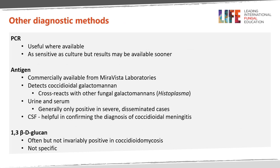Other diagnostic methods include PCR, which is useful where available. It is as sensitive as culture, but results may be available sooner. There is also a commercially available antigen test that detects coccidioidal galactomannan. It may cross-react with other fungal galactomannan, particularly from Histoplasma capsulatum. Both urine and serum can be used. It is generally only positive in severe disseminating cases, but may have usefulness in diagnosing coccidioidal meningitis when antigen is detected in the CSF. Finally, the nonspecific 1,3-beta-D-glucan test may be used; it is often but not invariably positive in coccidioidomycosis and is not specific, so if more specific tests are available, those should be used in lieu of the beta-D-glucan test.